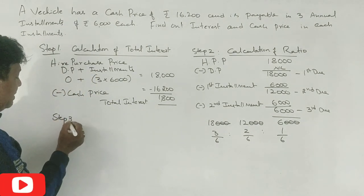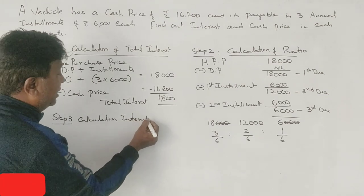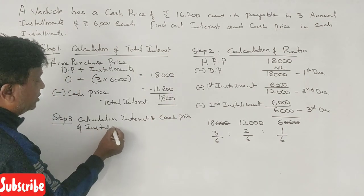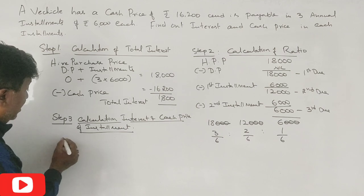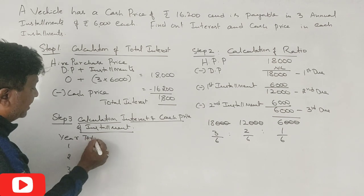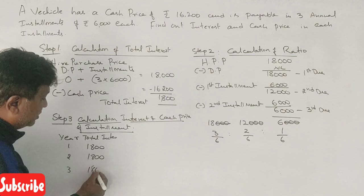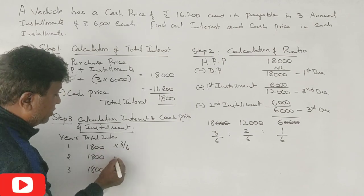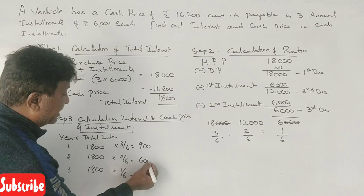Step number three: calculation of interest and cash price of each installment. The total interest is Rs. 1,800. Using the ratio 3/6, 2/6, 1/6 — first year interest is 1,800 × 3/6 = Rs. 900; second year interest is 1,800 × 2/6 = Rs. 600; third year interest is 1,800 × 1/6 = Rs. 300.